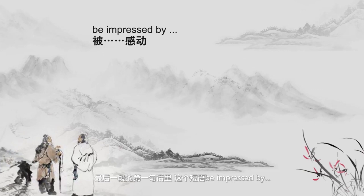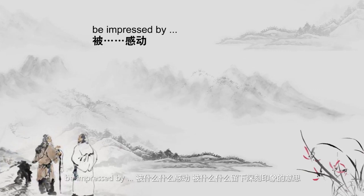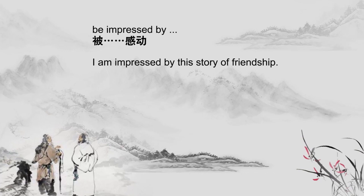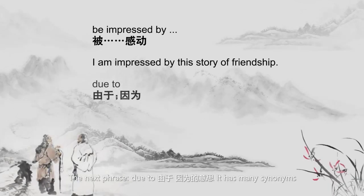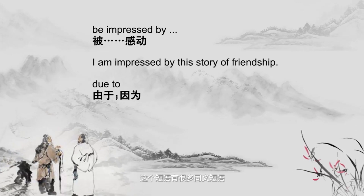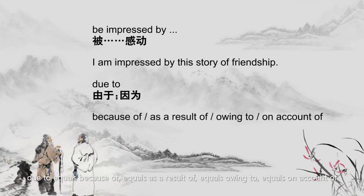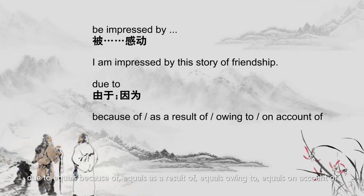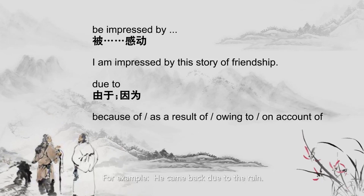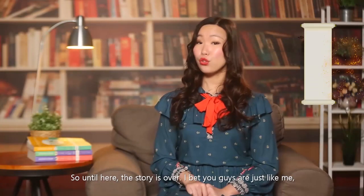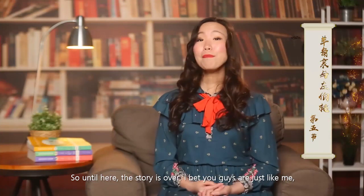In the last paragraph, the phrase 'be impressed by' means to be moved by or to have a deep impression made by something. For example: I'm impressed by this story of friendship. The next phrase 'due to' means because of. It has many synonyms: 'because of', 'as the result of', 'owing to', 'on account of'. For example: he came back due to the rain. And so the story is over.